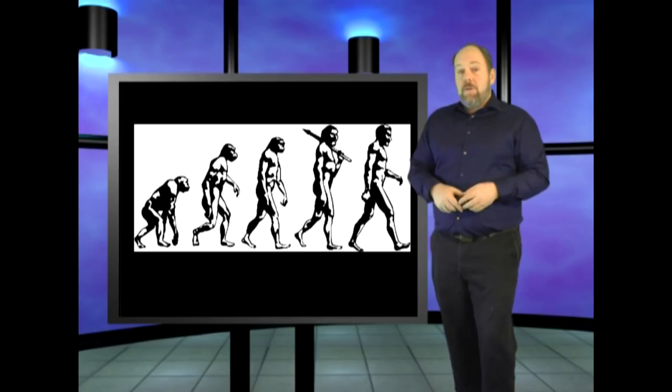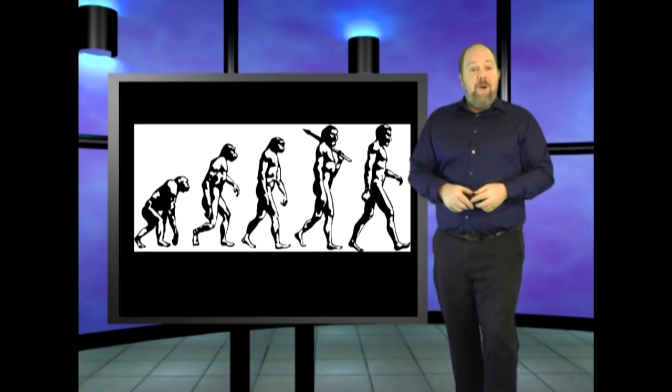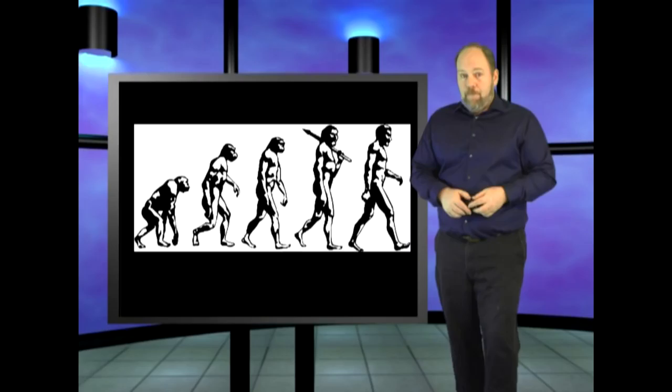The only place this sequence appears is in textbooks and museum displays. So if the fossil sequence is in the correct order, it is presented as proof of evolution. If the fossils are found in the incorrect order, it is still presented as proof of evolution.